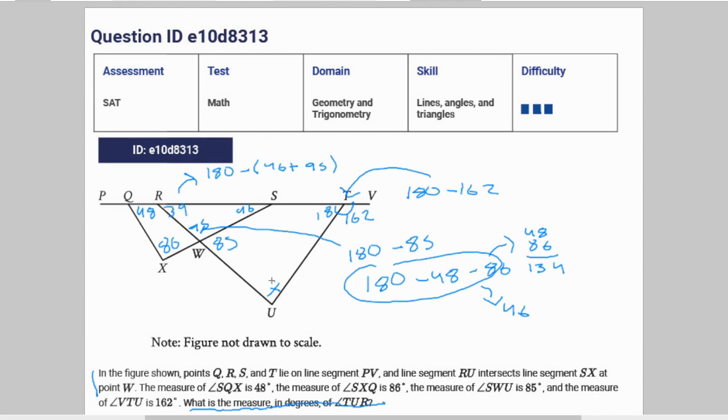Okay, I'm just going to do it anyways. So 46 plus 95 is 100 plus 41, which is 141. Therefore, it's 180 minus 141, which equals 39°.